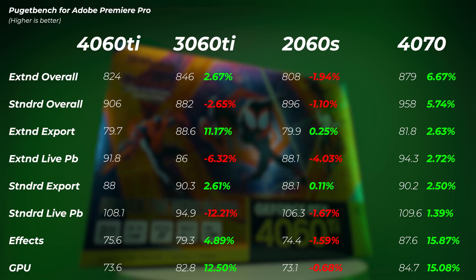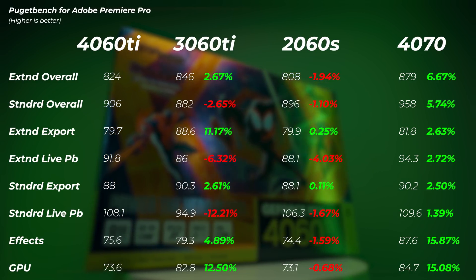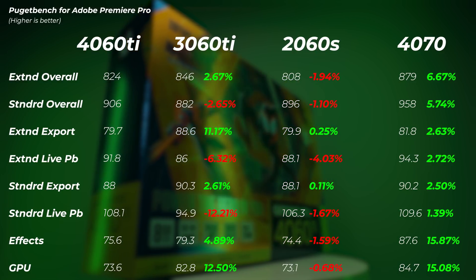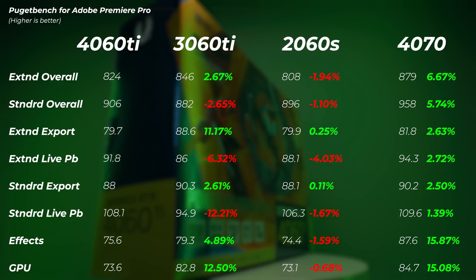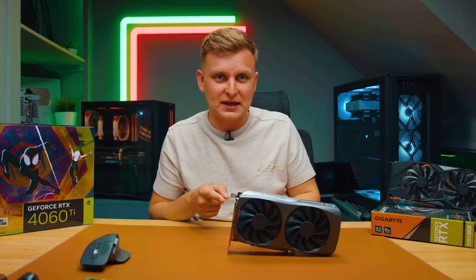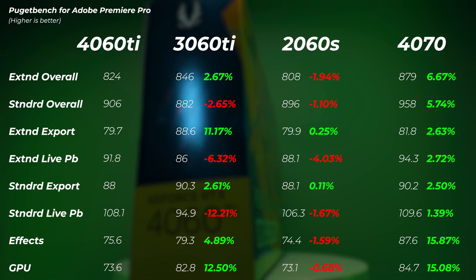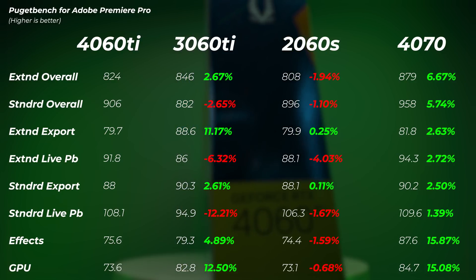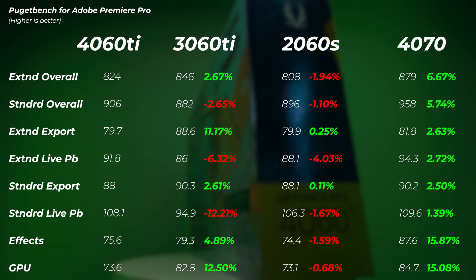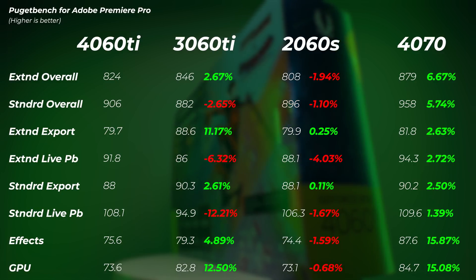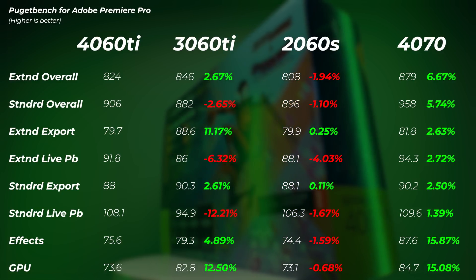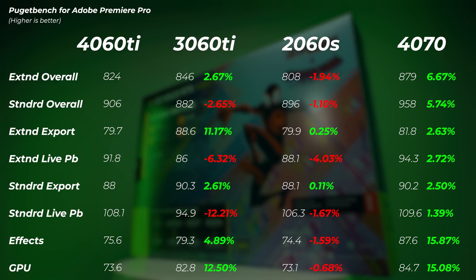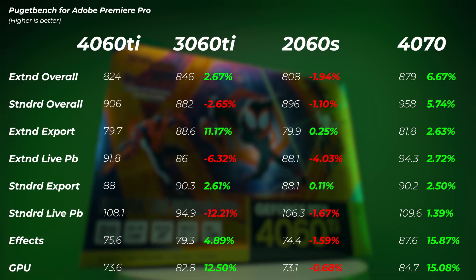Looking at the 2060 Super in Premiere Pro: extended and standard overall scores are only 2% slower, meaning between two generations we've improved roughly 1% in Premiere Pro performance each generation. The GPU score is just 0.7% slower — so we've gained about 1% in GPU performance between the 2060 Super and the 4060 Ti in Premiere Pro, which is just insane. The RTX 4070 is on another level, with GPU scores about 15% faster, but even then the 3060 Ti performs very well in Premiere Pro.